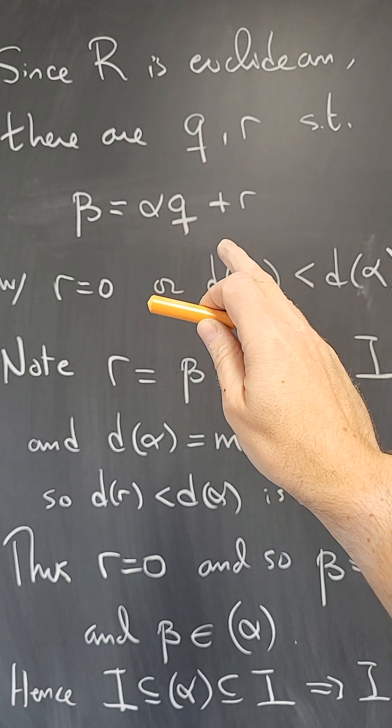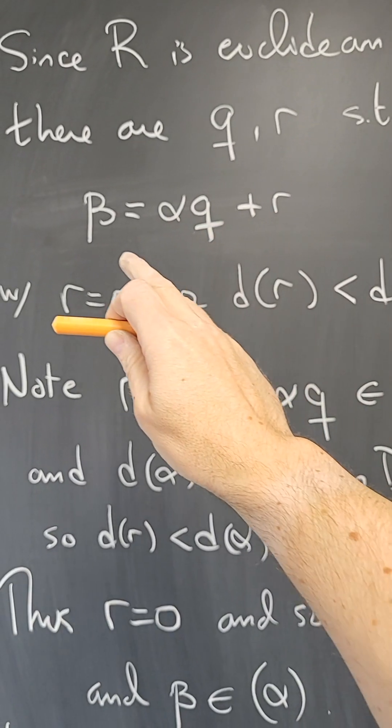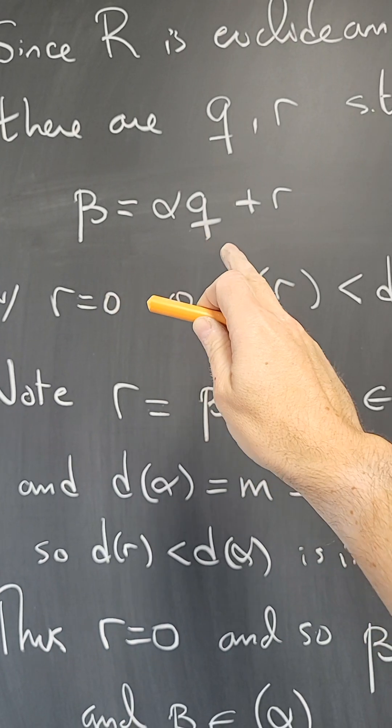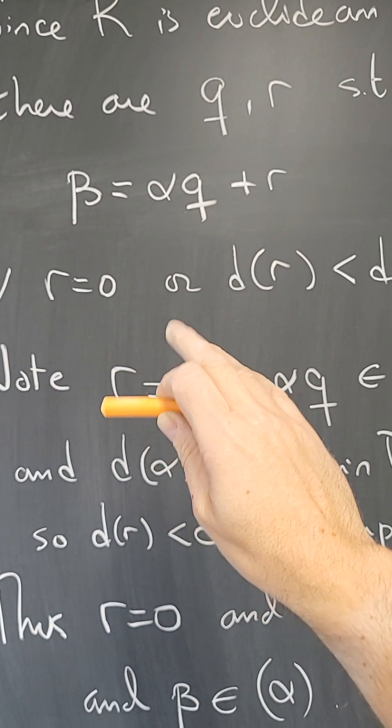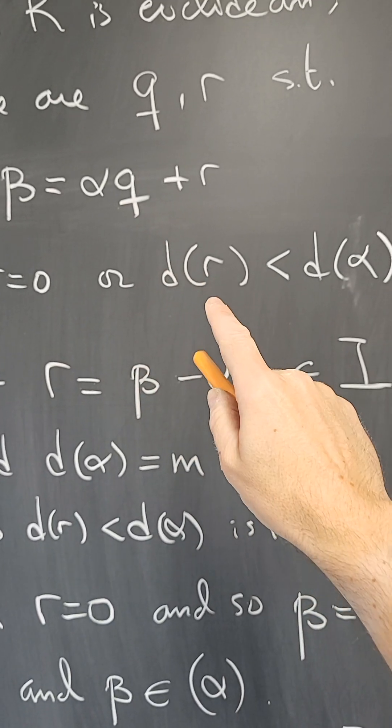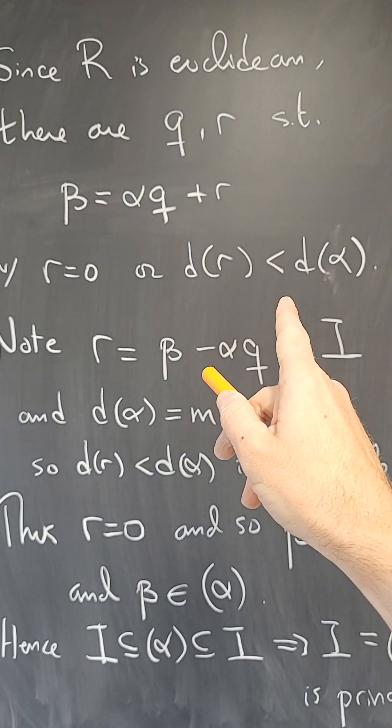Now, R is Euclidean, and therefore there are some Q and R in the ring such that beta is alpha Q plus R, where R, that remainder, well, if it's zero, we're going to be done. So the other possibility is that the D of R is less than the D of alpha in the definition of Euclidean.